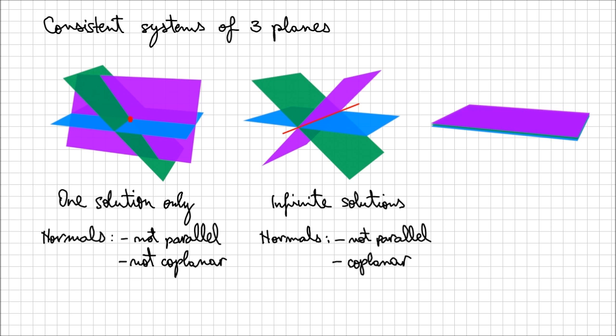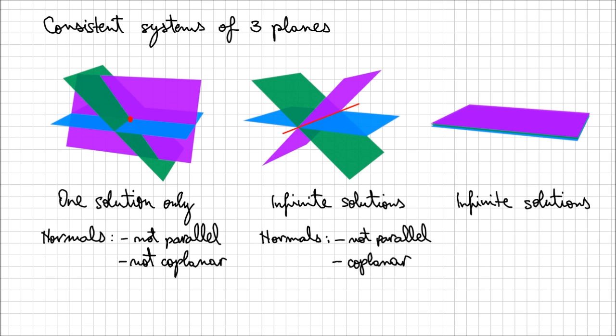The only other situation that you can have with consistent systems of three planes is when all three planes are coincident. If the planes are coincident, so they are basically one and the same, you're going to have again an infinite number of solutions, and in this case the normals are parallel. And of course, if you have a point contained in one plane, that's also contained in any other of those two planes.